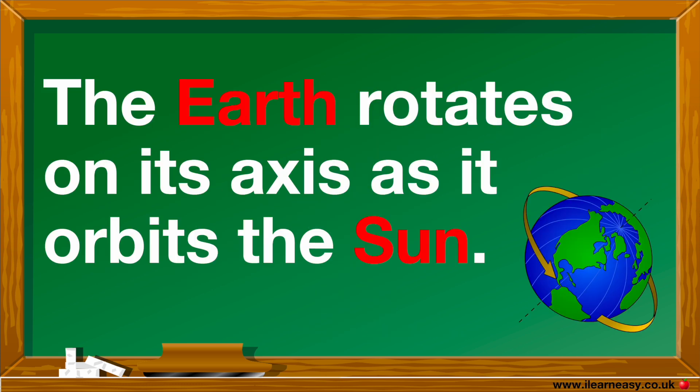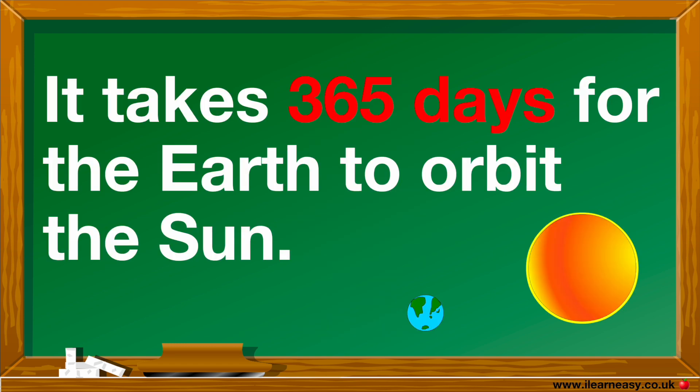The Earth rotates on its axis as it orbits the sun. It takes one day for the Earth to complete a rotation. It takes 365 days for the Earth to orbit the sun.